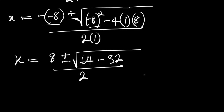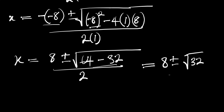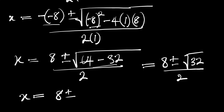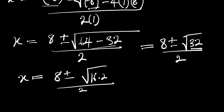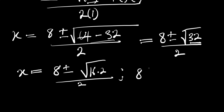So this gives us 8 plus or minus the square root of 64 minus 32 equals 32, divided by 2. We can express 32 as the product of 16 times 2 under the square root, divided by 2. So this gives us 8 plus or minus — the square root of 16 is 4 — so 4 root 2, divided by 2.